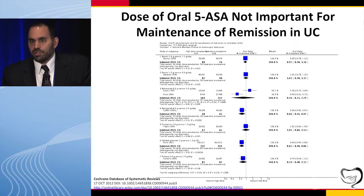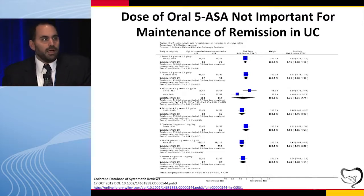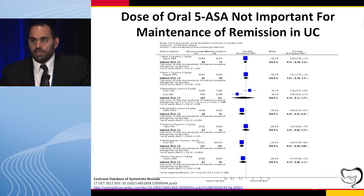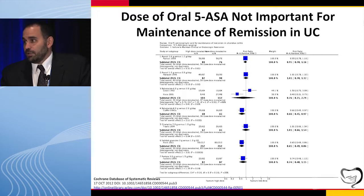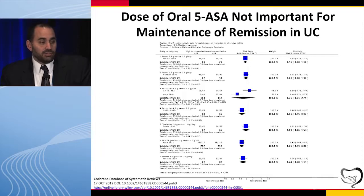When I was a resident and early fellow in training, the mantra was: use whatever dose of 5-ASA you needed to get a patient into remission, and use it to maintain remission. Others taught that you can lower the dose after induction. This meta-analysis suggests there's no difference in the dose used for maintenance of remission. So if you choose to go from 4.8 to 2.4 grams, based on these meta-analyses there's not really a difference.